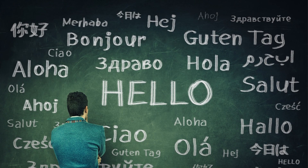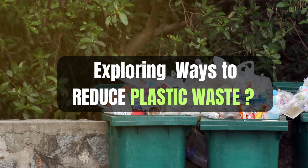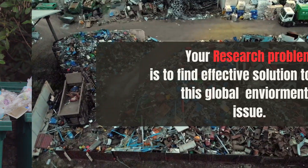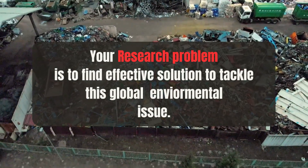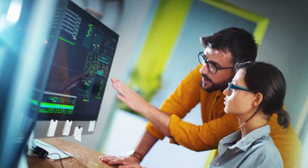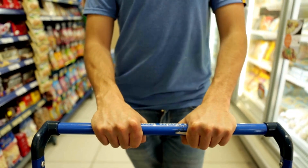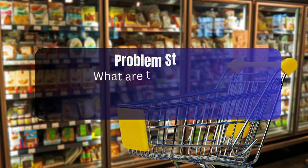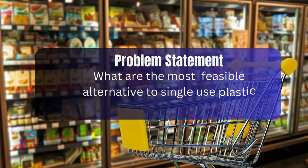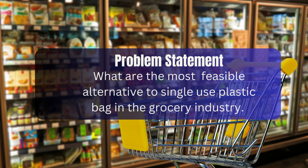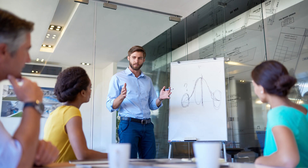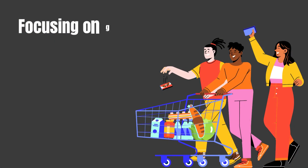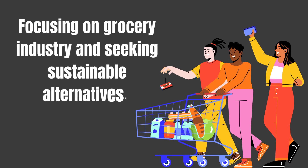Now let's move on to our second example to further clarify the difference. Suppose you are interested in exploring ways to reduce plastic waste. Your research problem is to find effective solutions to tackle this global environmental issue. But what could be a problem statement within this research problem? A problem statement could be: what are the most feasible and sustainable alternatives to single-use plastic bags in the grocery industry? Here the problem statement defines a specific area within the broader research problem, focusing on the grocery industry and seeking sustainable alternatives.